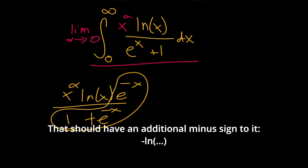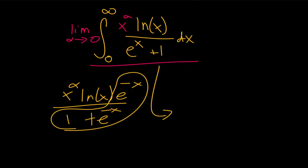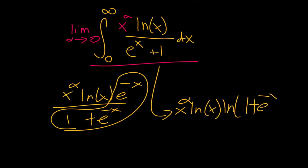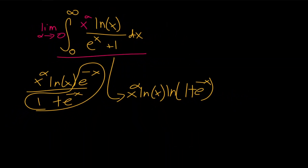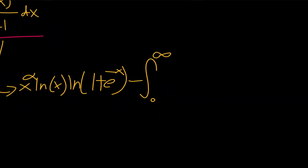So our integration by parts expression is going to look like x to the alpha times the natural log of x times the natural log of 1 plus e to the minus x, and then we have the second half of our expression: minus the integral from zero to infinity of the derivative of the remaining terms. So we're going to want to distribute this.